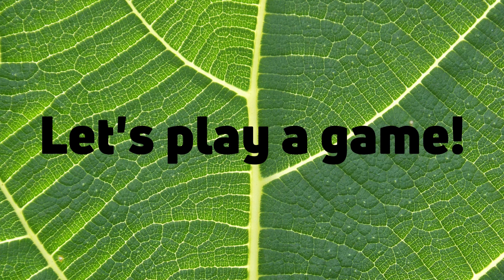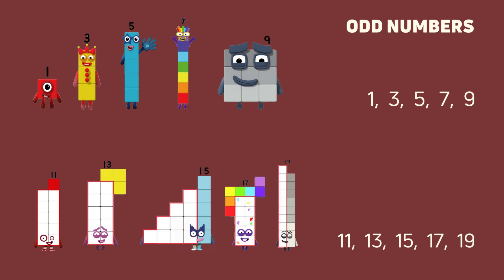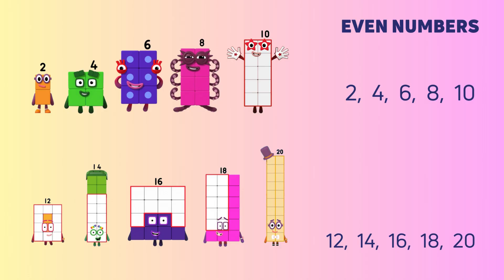Let's play a game. Remember, the odd numbers are one, three, five, seven, nine, and eleven, thirteen, fifteen, seventeen, nineteen. The even numbers are two, four, six, eight, ten, and twelve, fourteen, sixteen, eighteen, twenty.